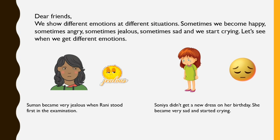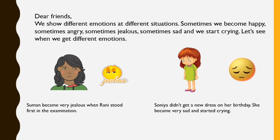Next, this is Sonia. Sonia's birthday was on that day but she didn't get a new dress on her birthday. So Sonia became very upset and very sad — as you also feel sad on your birthday when you are not getting your proper dresses or gift items or things done as expected. Sonia got very sad and started crying.